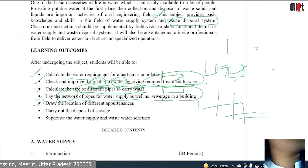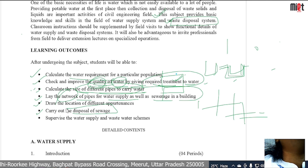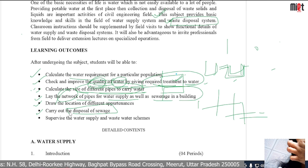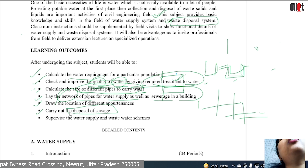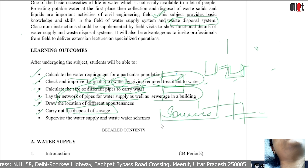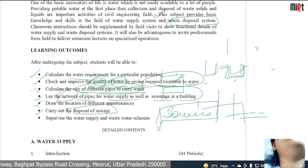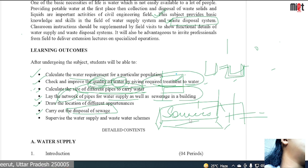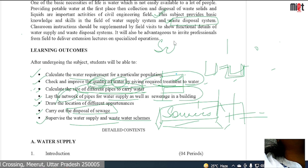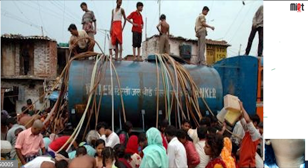We will draw the location of different appurtenances and carry out the disposal of sewage. When water has been used, the used water needs to be disposed of — either directly or by treating it first and then disposing of it. If we release polluted water untreated, our water sources will get polluted. The last point is to supervise the water supply and waste water schemes, which we will also study.